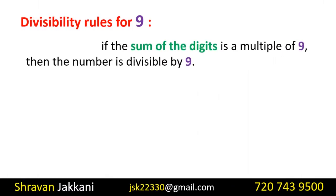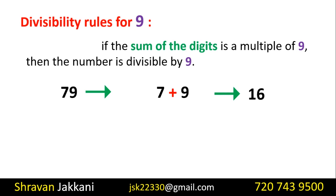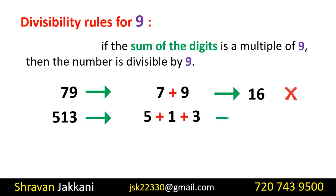Divisibility rule of 9: A number is divisible by 9 if the sum of its digits is divisible by 9. For example, 538 — if you add the digits, 5 plus 3 plus 8 equals 16. Since 16 is not divisible by 9, 538 is not divisible by 9.